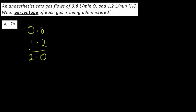Let's consider first of all oxygen. The proportion of oxygen expressed as a fraction is simply 0.8 — the value for oxygen — over the total, which we found to be 2.0. I'm not happy dealing with fractions that have decimals, so I'm going to multiply top and bottom by 10 to get rid of the decimal point. So 0.8 over 2.0 is literally the same as 8 over 20.